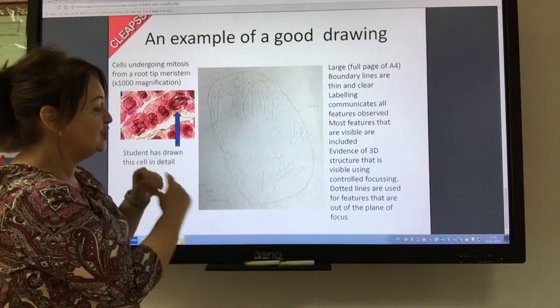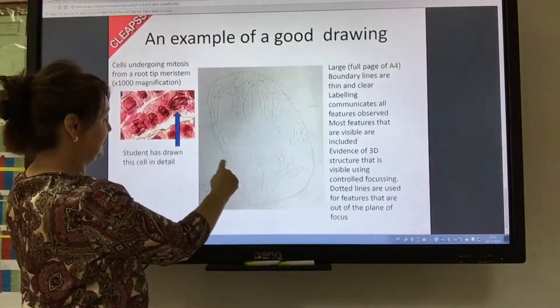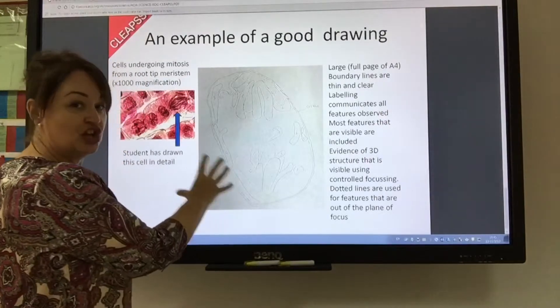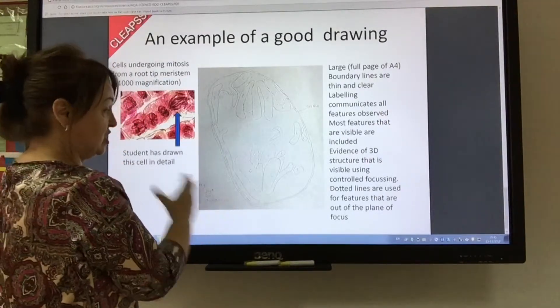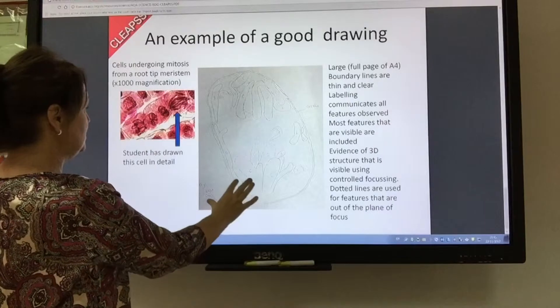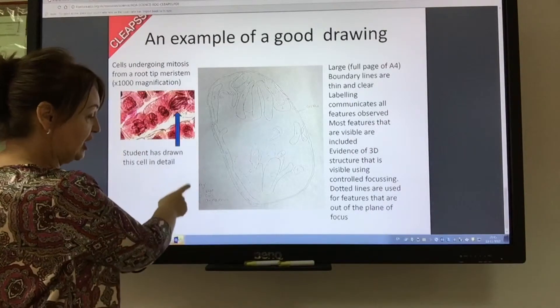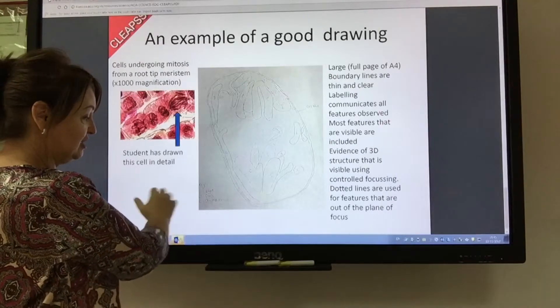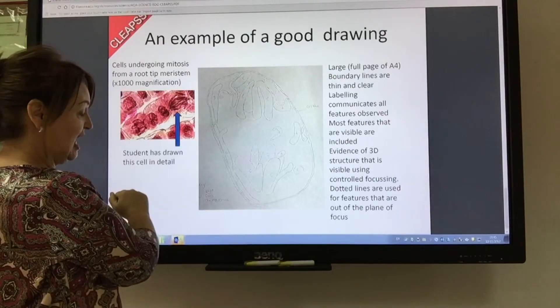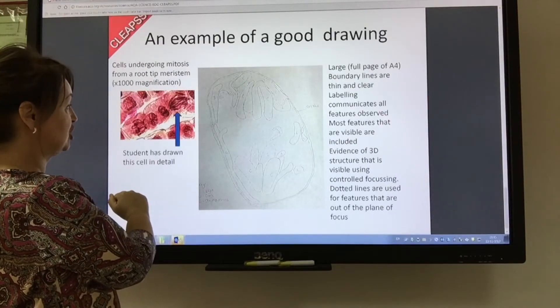And they've used dotted lines for features that are out of focus. So we know they're there, but they're slightly out of focus. And we've got a key down here of light, dark, and where the chromosomes actually are.